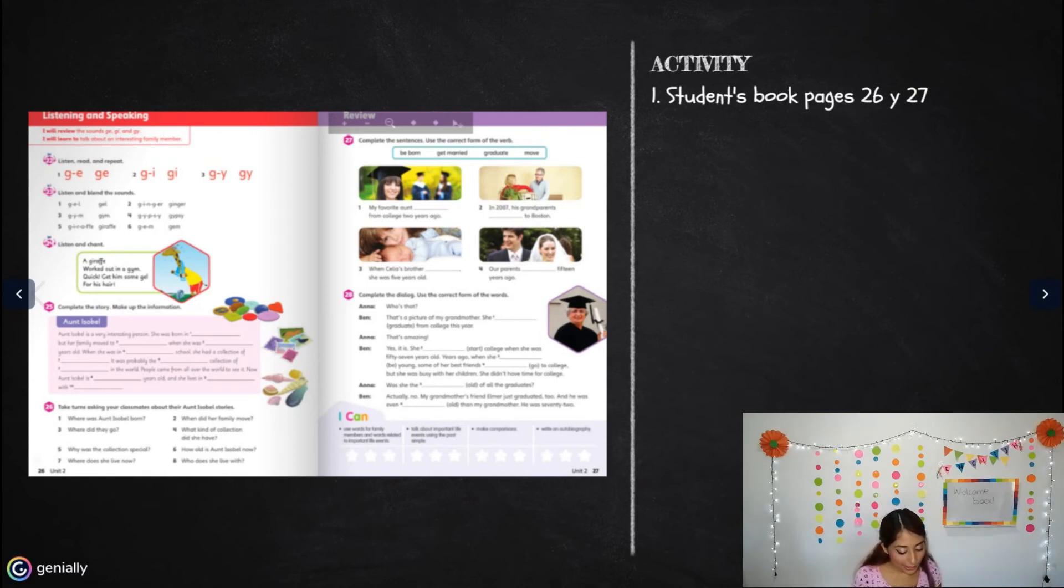In exercise 28 it says complete the dialogue, use the correct form of the words. You're going to read the conversation between Anna and Ben and you're going to complete by using verbs and the words that they are giving you between parentheses. Some of these are comparative adjectives and also superlative adjectives. You need to remember this topic and notice if you're going to write about a comparative or a superlative.